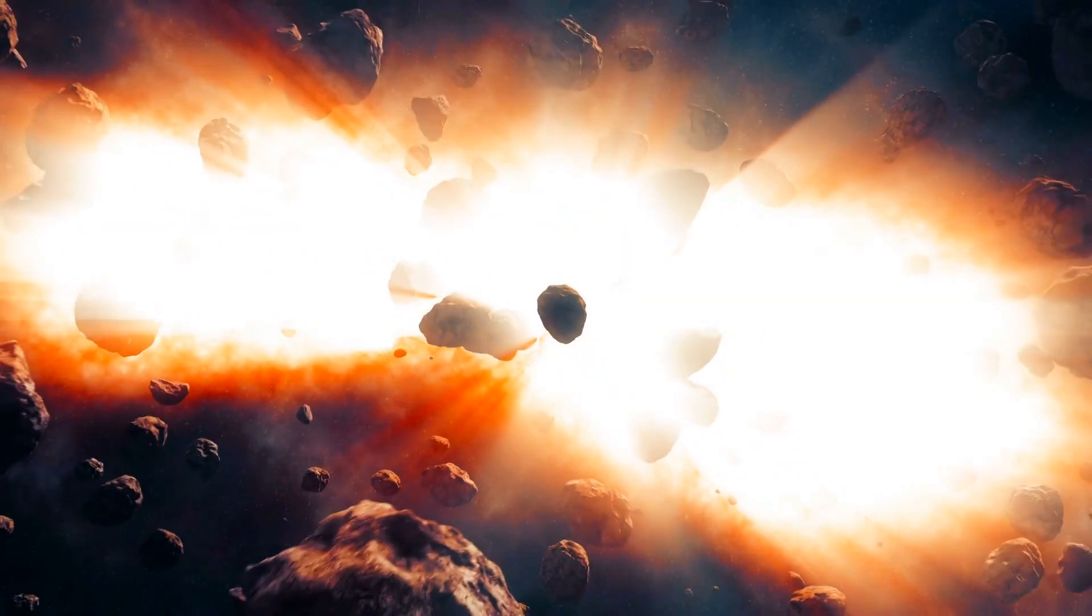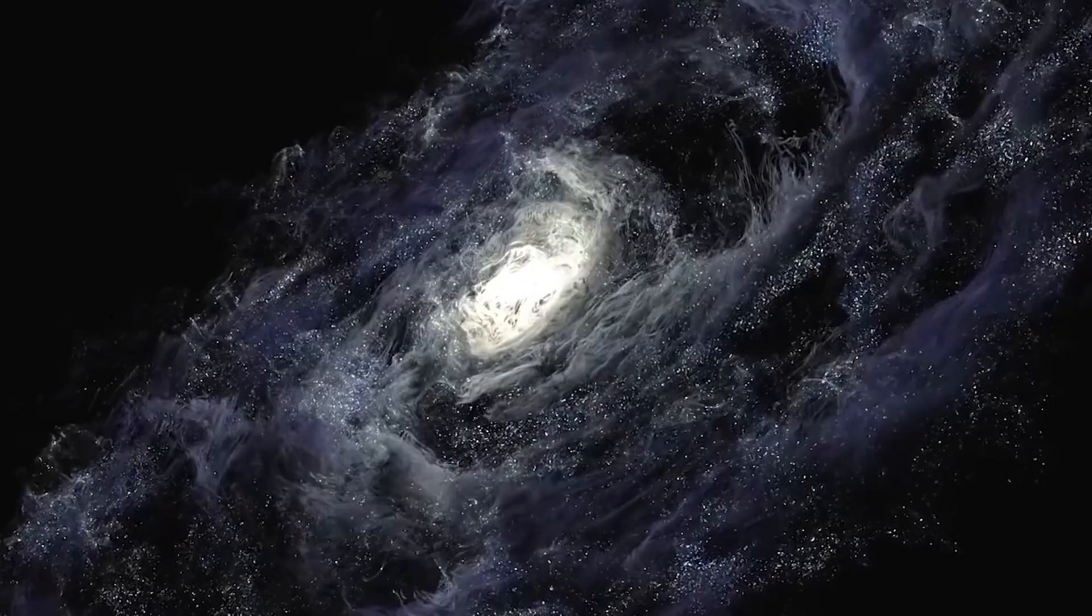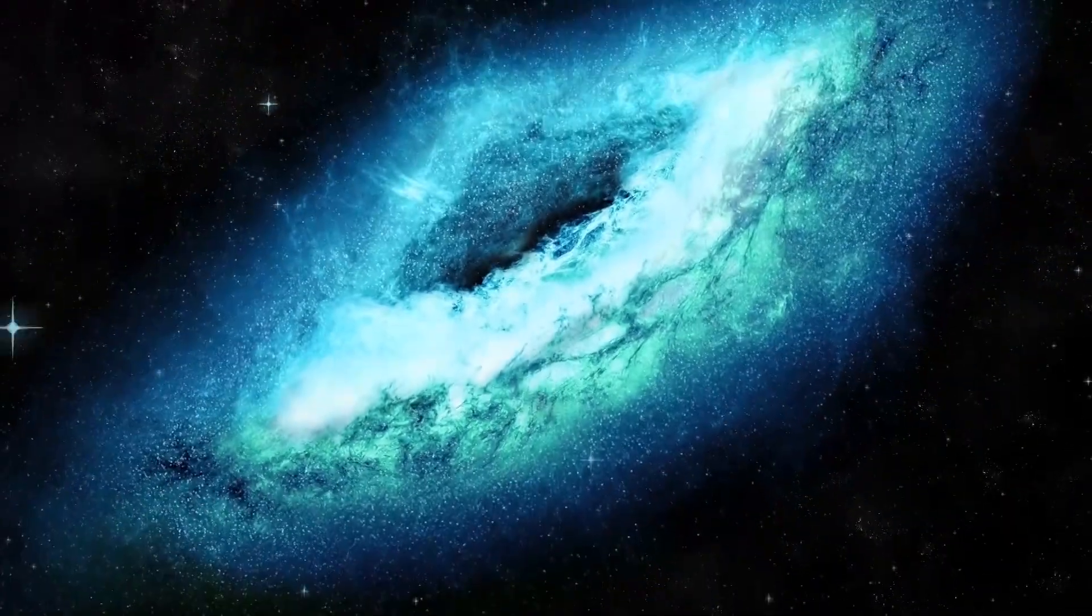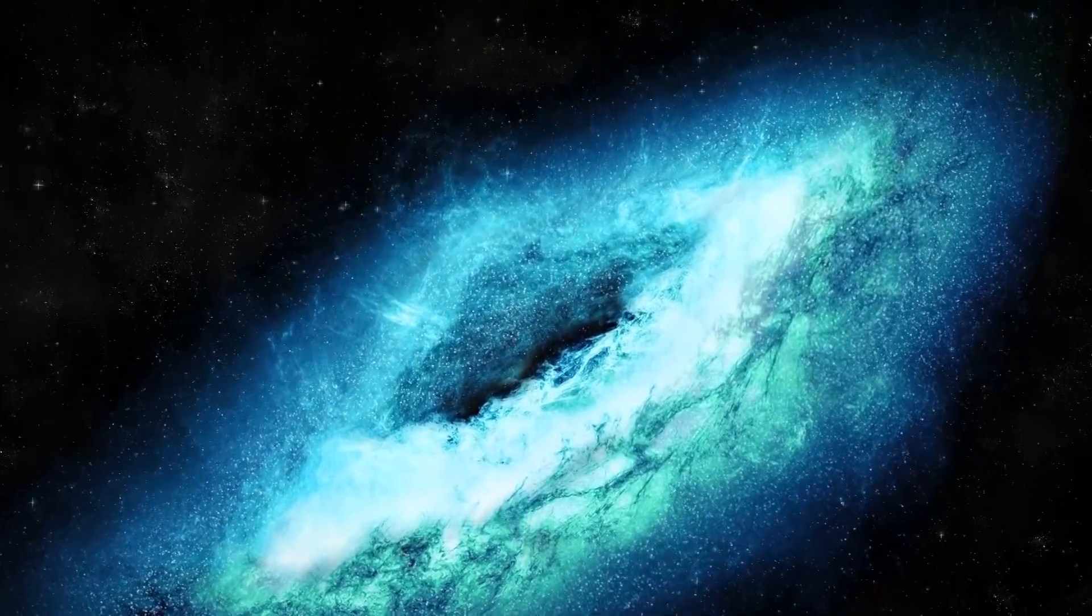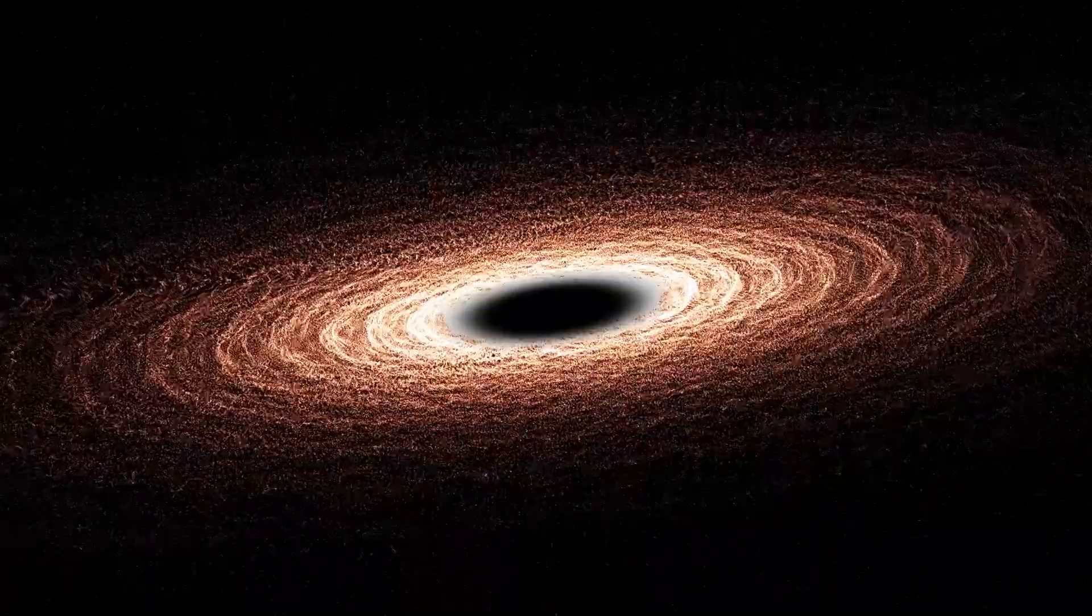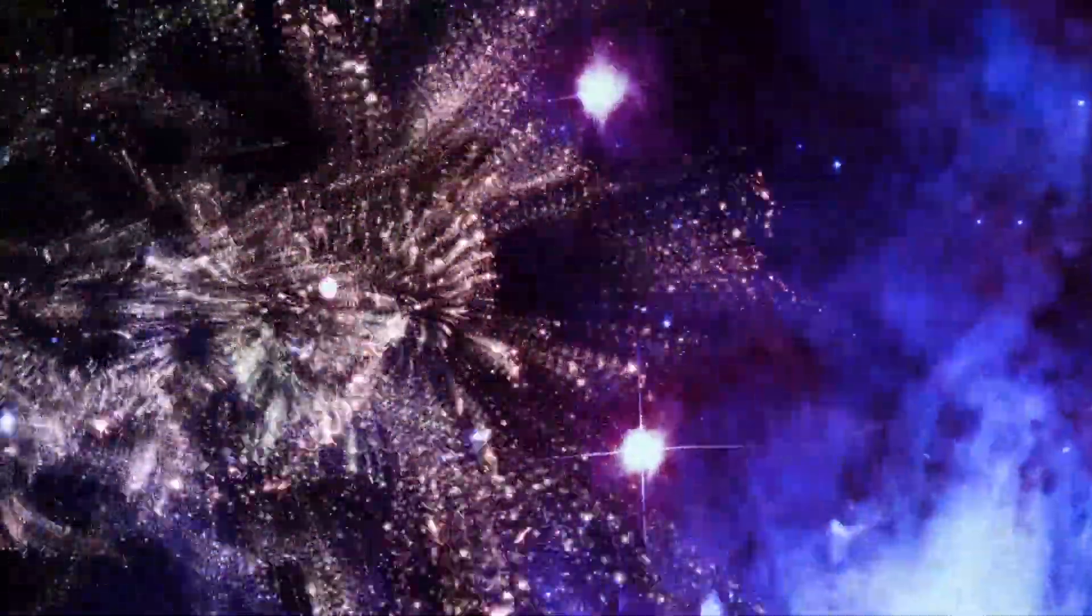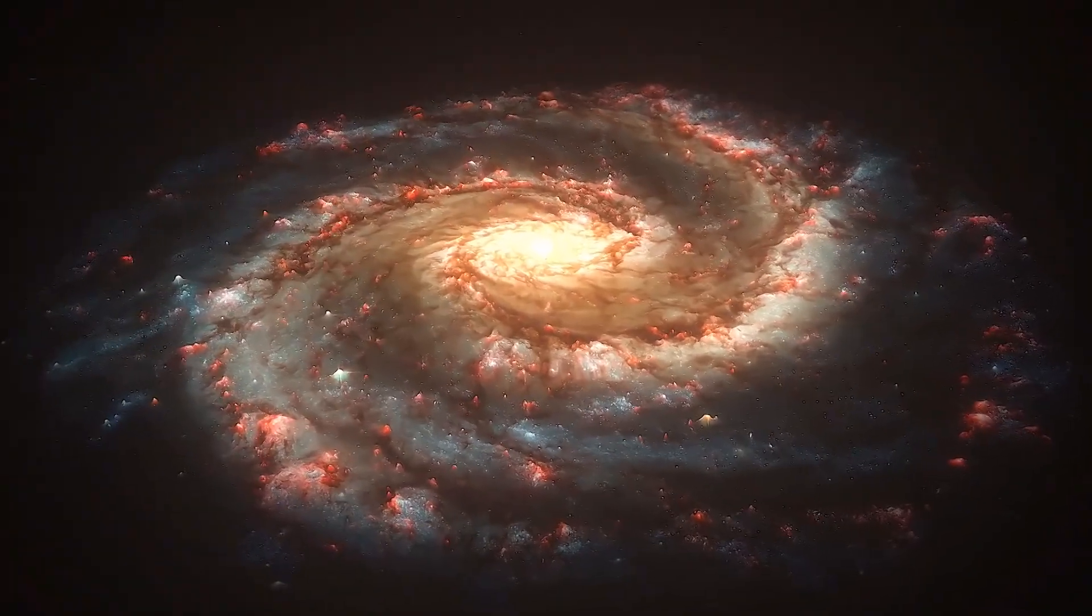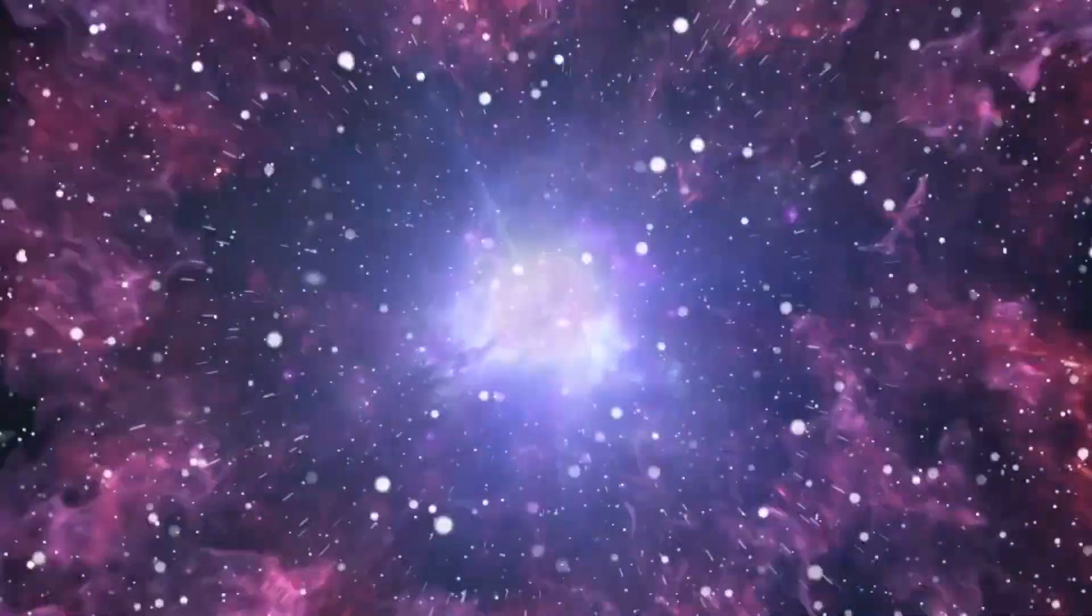While space rocks of this magnitude that could cause a global cataclysm are likely to hit Earth only once every 100 million years or so, near-Earth objects scaling from 50 to 100 meters across can strike much faster, roughly every 1,000 years or so, and can still cause massive destruction on an epic scale. Meteors and asteroids of this relatively smaller size can still destroy a large city or level similarly larger areas, and can also lead to devastating ecological destruction.